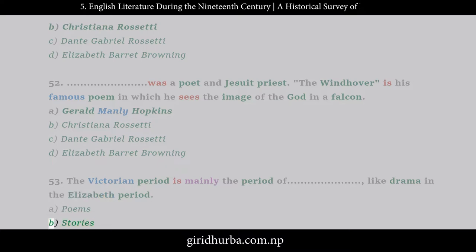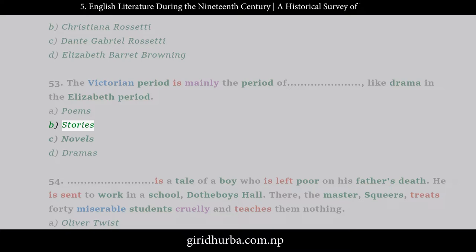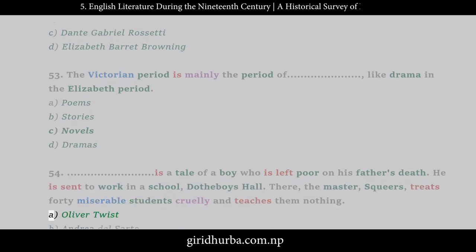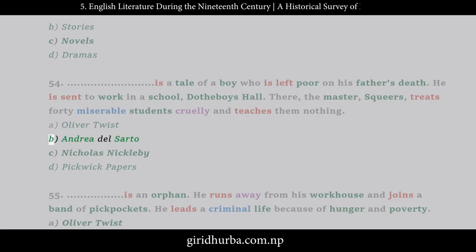Question 54: __ is a tale of a boy who is left poor on his father's death; he is sent to work in a school, Dotheboys Hall, where the master Squeers treats 40 miserable students cruelly and teaches them nothing. A. Oliver Twist, B. Andrea del Sarto, C. Nicholas Nickleby, D. Pickwick Papers.